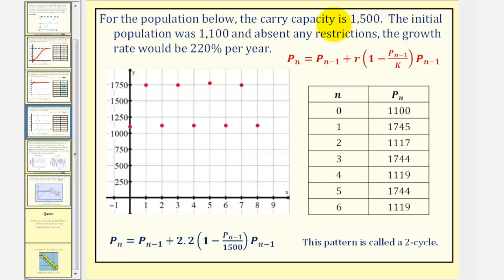Now let's take a look at one more example. Again, the carrying capacity is 1,500. The initial population was 1,100. But absent any restrictions, the growth rate would be 220%. So again, using our recursive equation here below, we should be able to generate the population levels given in the table.